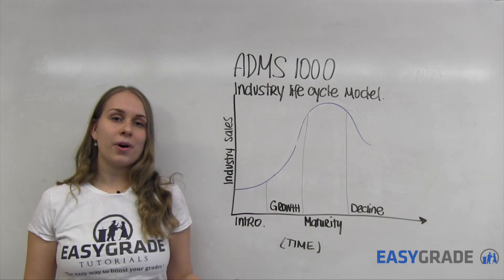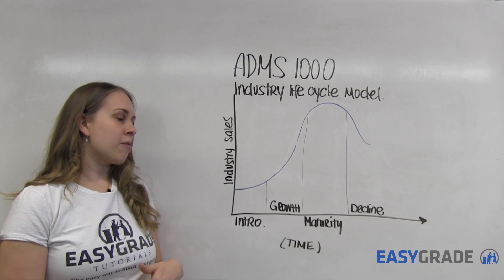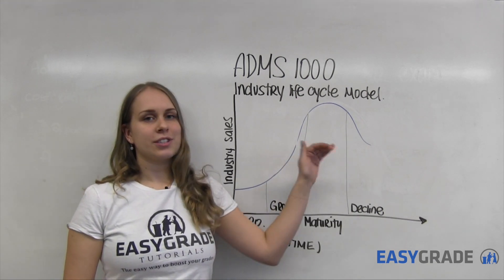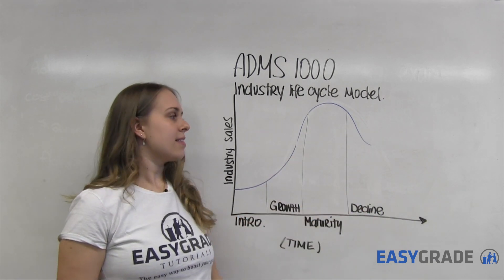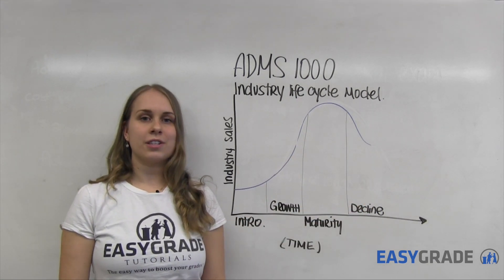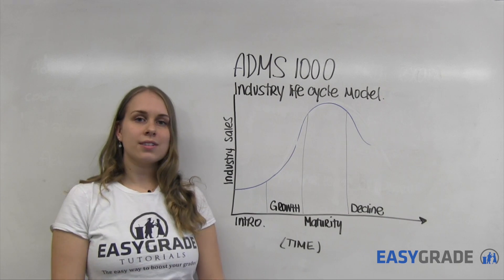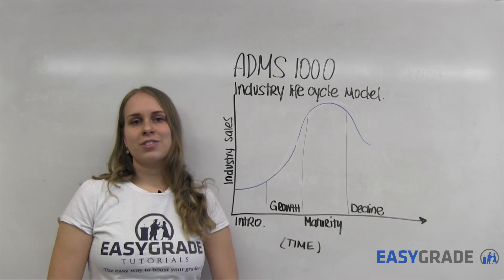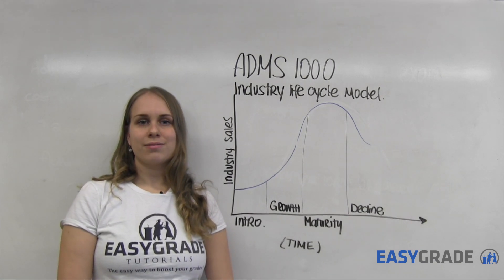Then when we started to see a lot of new technological advancements like the iPod and wireless things, the CD market started to decline, and that's how it reached the decline phase of the industry lifecycle. That's an example of the industry lifecycle model.